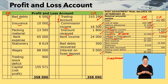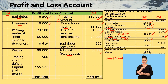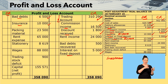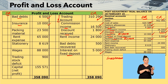Packing materials — $23,500. Packing materials are also an expense. That means when I come to my profit and loss account I will bring it to the debit side because it is an expense.